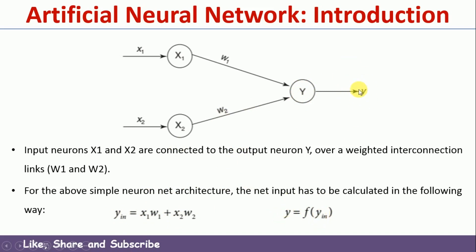If the termination condition is reached, these are the final weights; otherwise, we go back and modify the weights until we reach the termination condition. One more important thing is that the activation function is not fixed — based on our requirement, we can apply different activation functions like step function, sine function, sigmoid, ReLU, and so on. There are many activation functions available. Based on our requirement, we apply the chosen activation function on top of the summation term to get the output, which is then used to decide whether to terminate or update the weights.